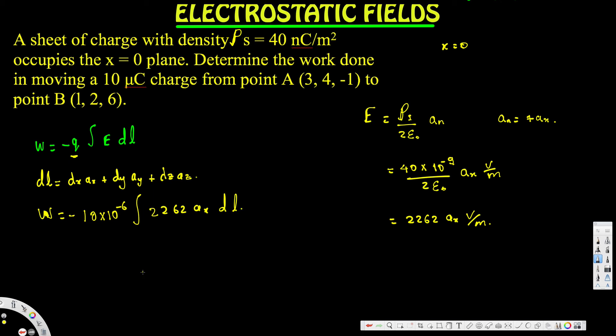The limits of integration: we're going from x = 3 to x = 1, so the limits are 3 to 1. This gives us -10 × 10⁻⁶ × 2262 times the integral from 3 to 1 of ax·dx.